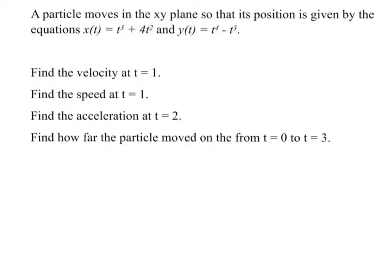So a particle moves in the x-y plane, so its position is given by that. So let's just put that in a vector form. I'm going to put it down here. I'm going to say position, which we usually denote with s. Position vector is t³ + 4t². So this is the x and t⁴ - t³. So this is the y.